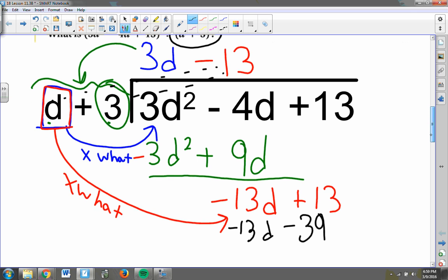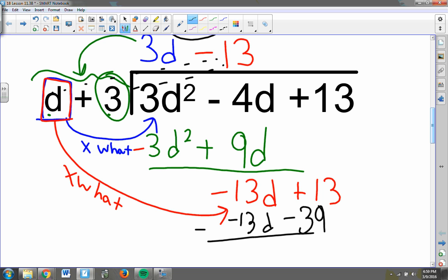So one more time, I'm going to subtract. Negative 13d minus negative 13d, they're the same, so they go away. Positive 13 minus negative 39 gives me positive, because this is like adding a positive now. It gives me a positive 52. But I no longer have anything to pull down from right here. So my remainder is 52.